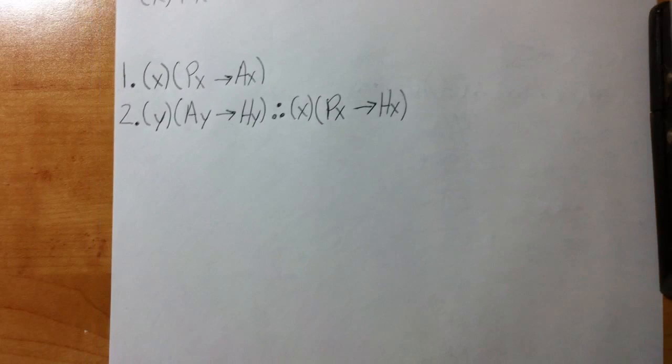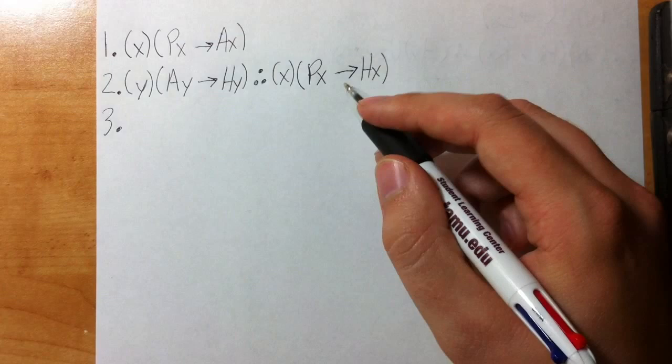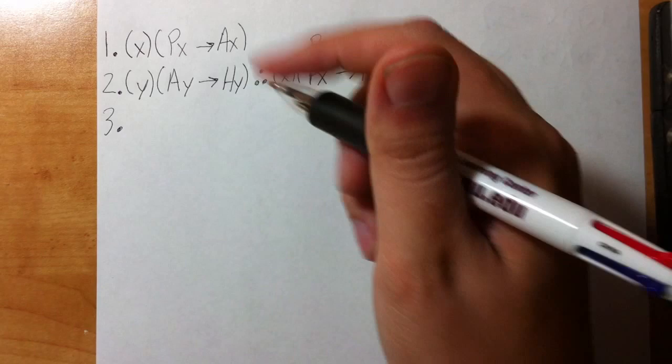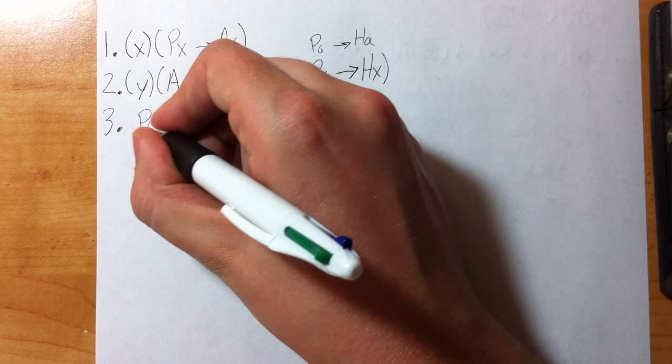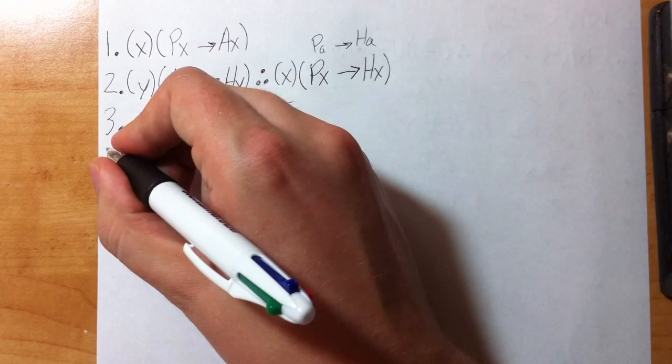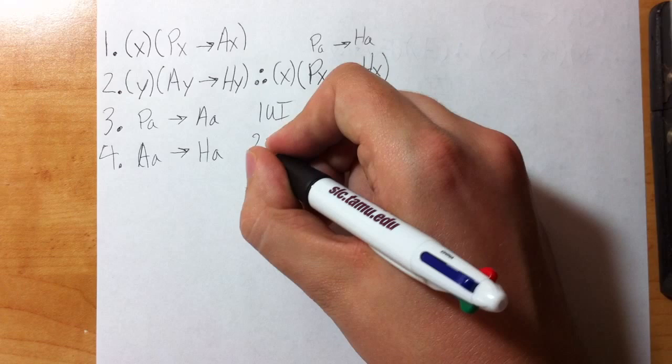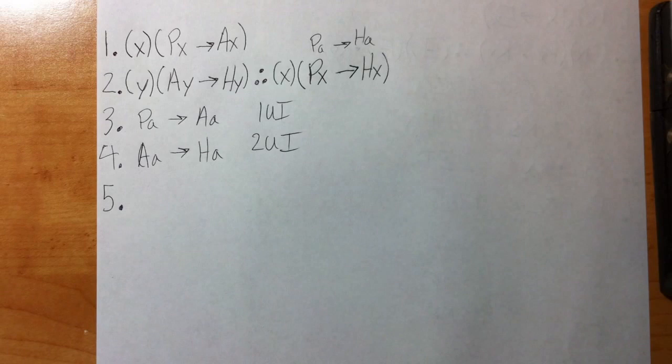So let's do a practice problem with that. Again, looking at my quantified conclusion, I'm thinking okay, if I can get Pa arrow Ha, maybe I can use UG to turn it into the conclusion. So I have two universally quantified premises, so I'm just going to unpeel them real quick. I'm going to do just the first one first: Pa arrow Aa, line one UI. Line four, I'm just going to peel out line two: Aa arrow Ha, line two UI.